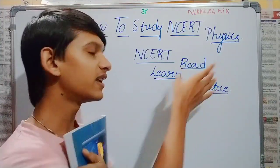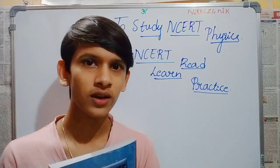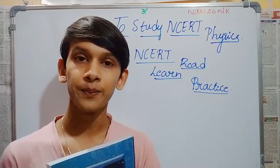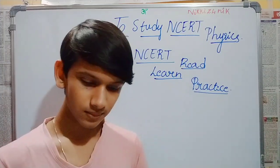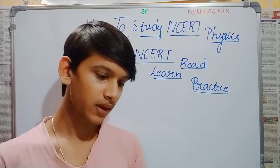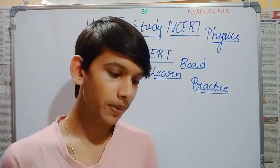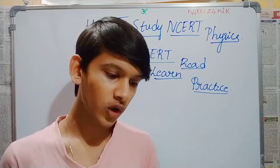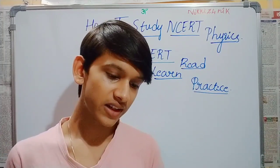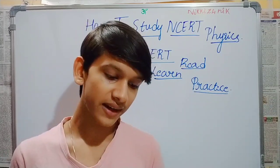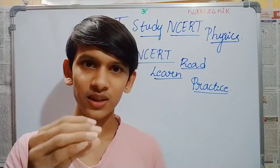First, you have to read the NCERT book. You have to read it. If you are interested in class, you have to read that. The Gravitation chapter is complete. There are topics: Introduction, Kepler's Law, Universal Law of Gravitation, The Gravitational Constant, Acceleration Due to Gravity of Earth, Gravitational Potential Energy, Escape Speed, Earth Satellite, Energy of an Orbital, and Geostationary and Polar Satellites and Weightlessness. Here are topics — you can learn topic-wise.